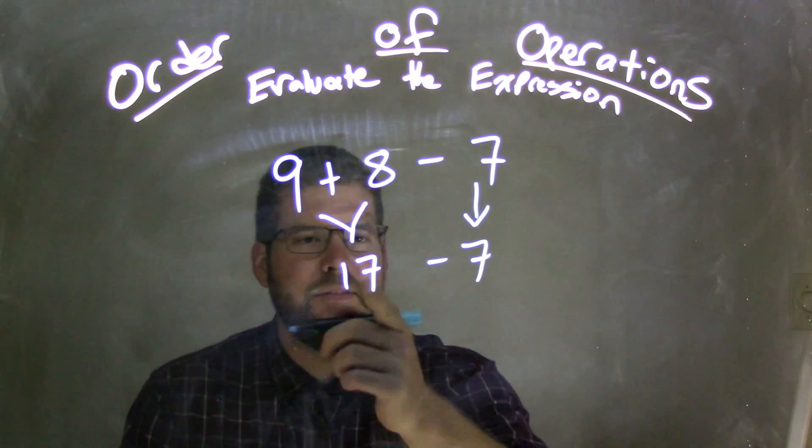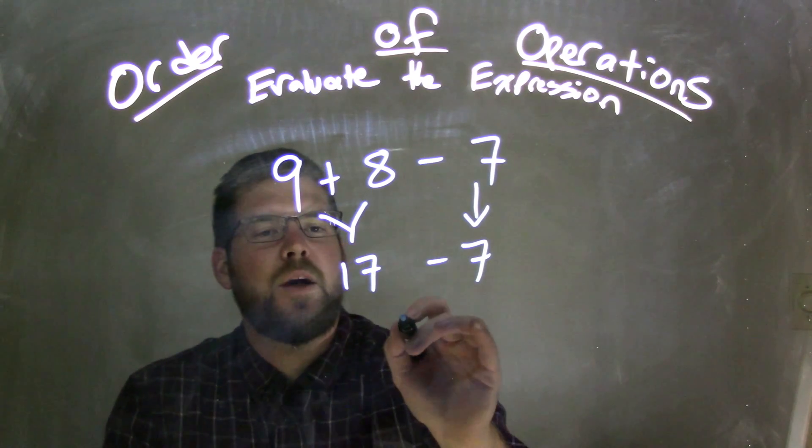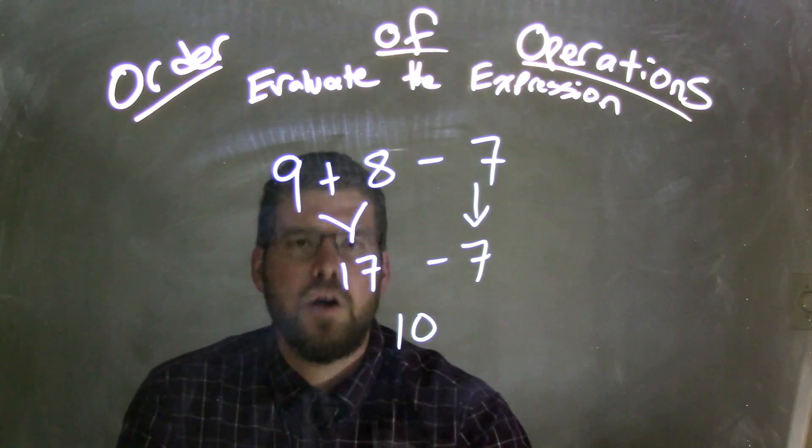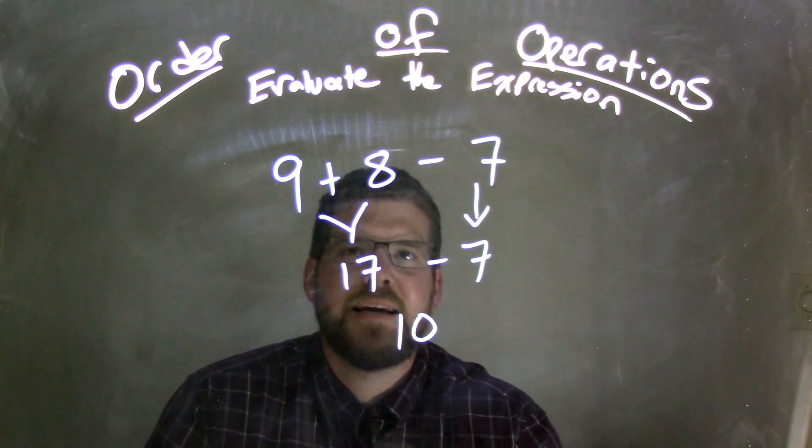9 plus 8 is 17, subtract it by 7 - well, 17 minus 7 comes out to be 10. So our final answer for 9 plus 8 minus 7 is 10.